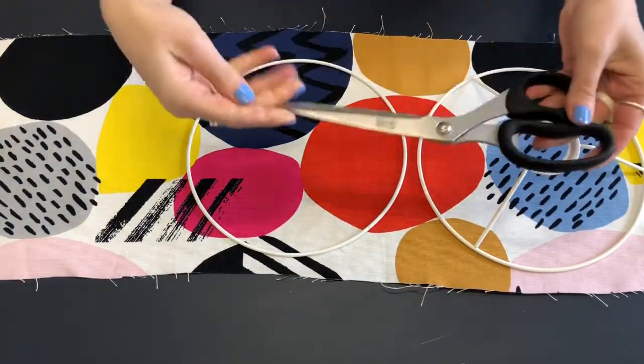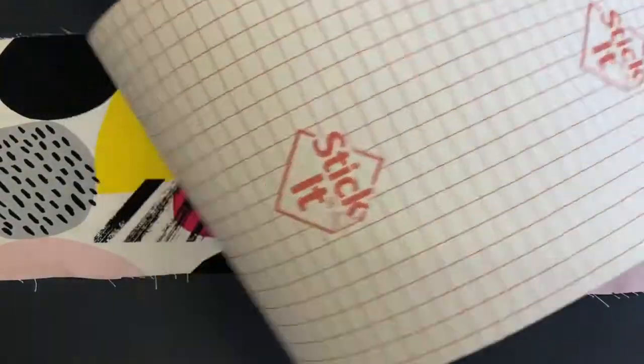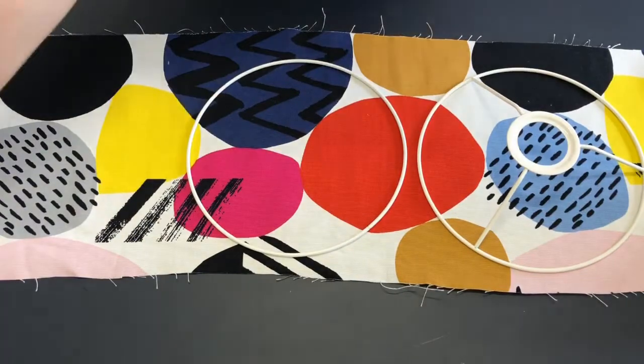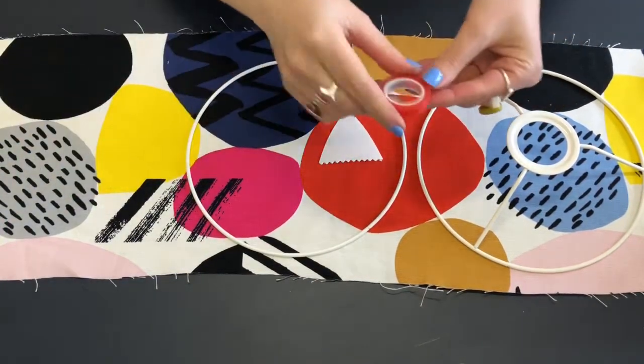You will need a sharp pair of scissors, your sticky back plastic, your lampshade tucking tool and your tessa tape.